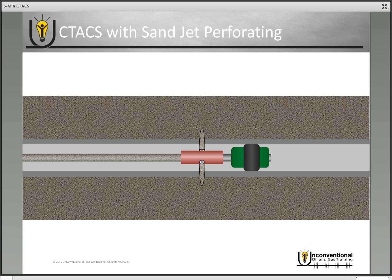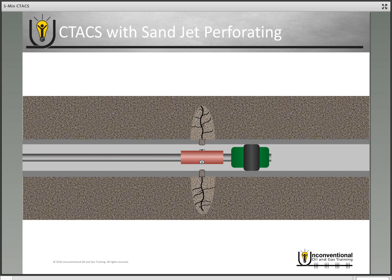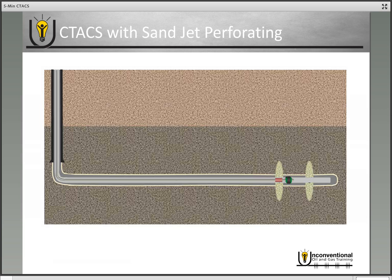Shut down your coil tubing pumping and then start your fracturing through those perforations and out into the second stage. Unset your packer and then you're ready to move up hole to the third stage. Reset your packer for isolation, sandjet perforate, and begin your third stage frack job. Then you're just repeating the process from there until all stages in the well have been fractured.